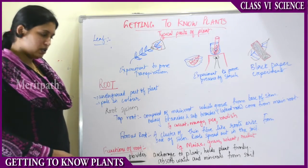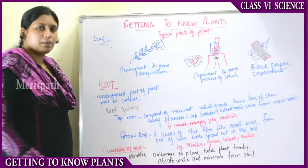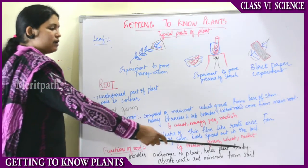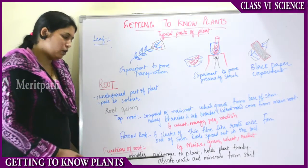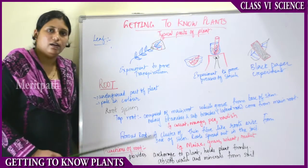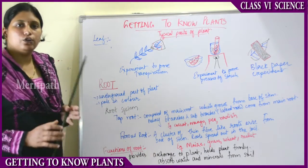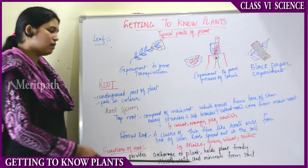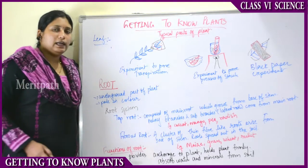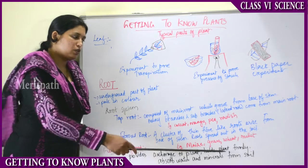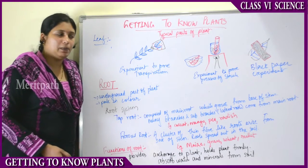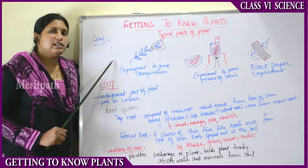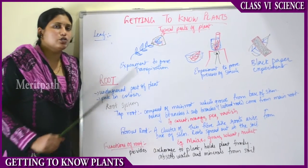The functions of the roots are: it provides anchorage to the plant, meaning it holds the plant firmly and provides the main support. It also absorbs water and minerals from the soil and gives them to the other parts of the plant. Those are the main functions of the root.